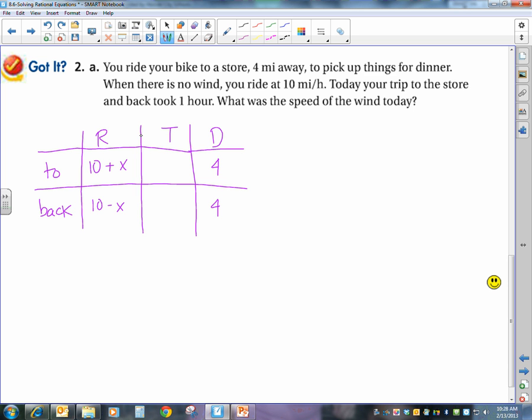Okay, my distance is four miles away. So how do I get my time? If I know rate times time equals distance, then that means that the time is equal to the distance divided by the rate. So these are my times. And it told me that my total trip to the store and back took one hour. So I'm going to take my total time and make it add up to an hour. So my equation will be 4 over 10 plus x plus 4 over 10 minus x equals 1.